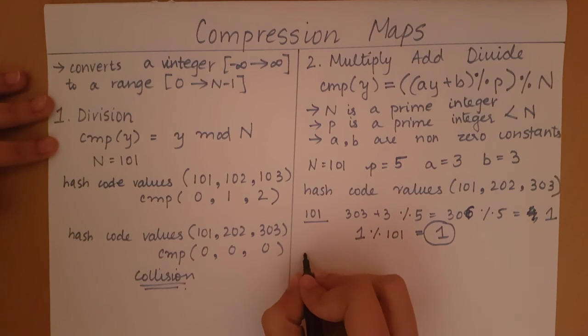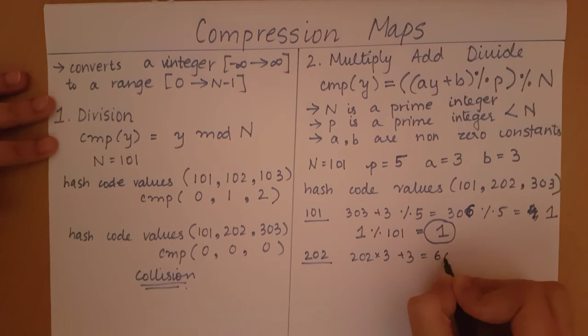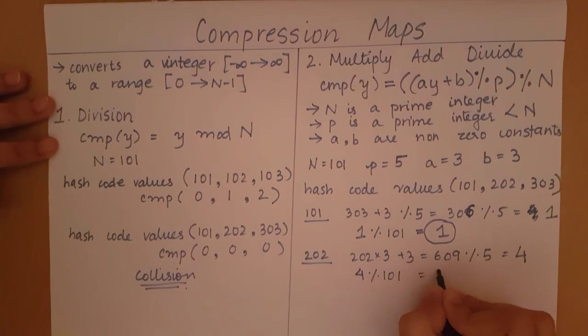Let's look at the compression of 202. I have 202 times 3, which will give me 606 plus 3. So 606 plus 3 will give me 609. 609 mod 5 will give me 4. Now we do 4 mod 101, which will give me 4.